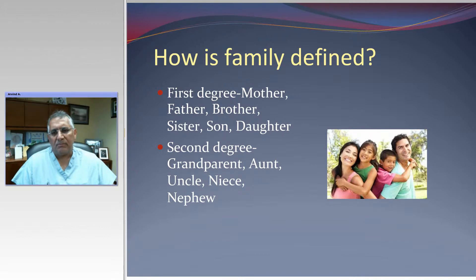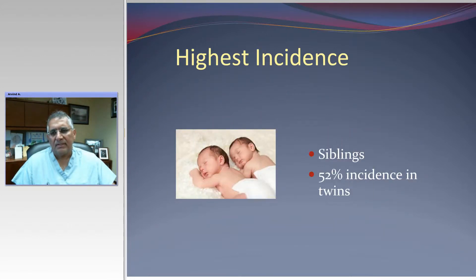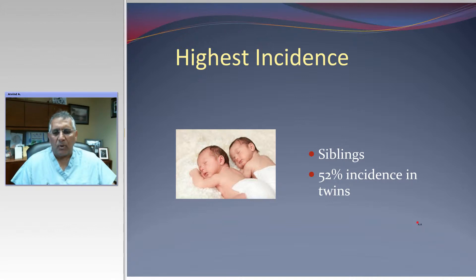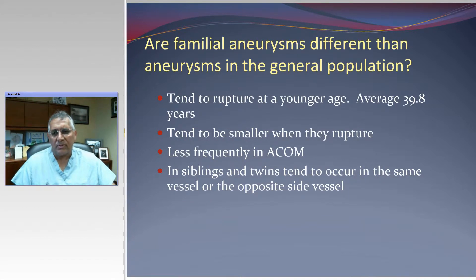A lot of people have questions about when they should be screened if they are in this high-risk group with a family history of aneurysms, and we'll try to give some definite ideas on what may be worthwhile. Looking at the incidence in siblings, there's a 52% incidence in twins. If one brother or sister had an aneurysm at age 45 or 50, the second one would have a rupture at the same time. The genetic factors seem to be very important, especially in twins.